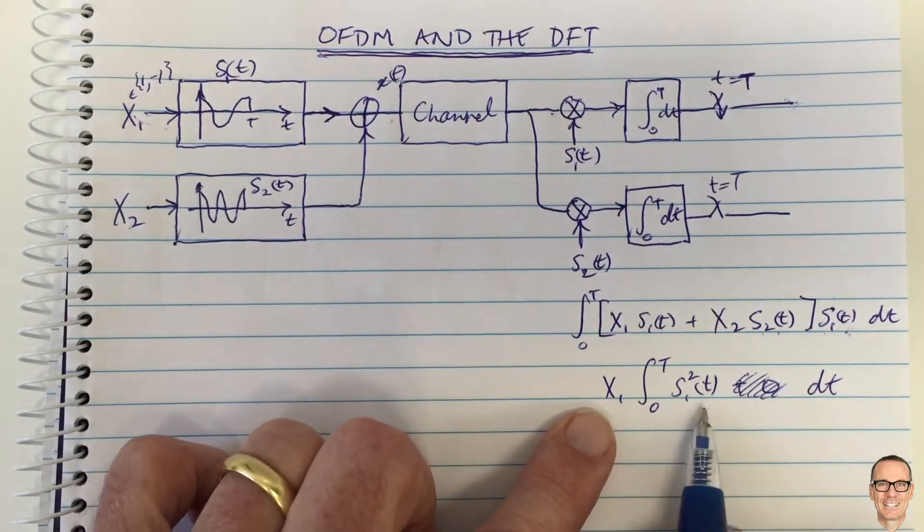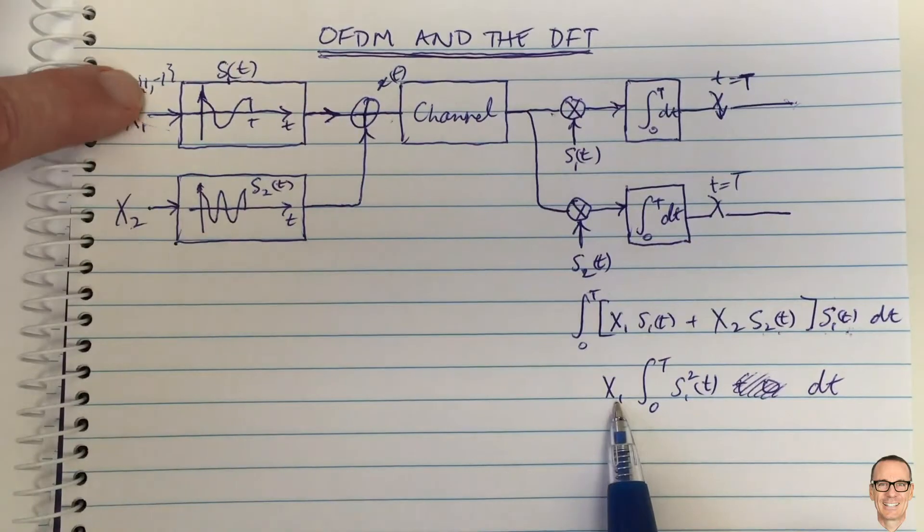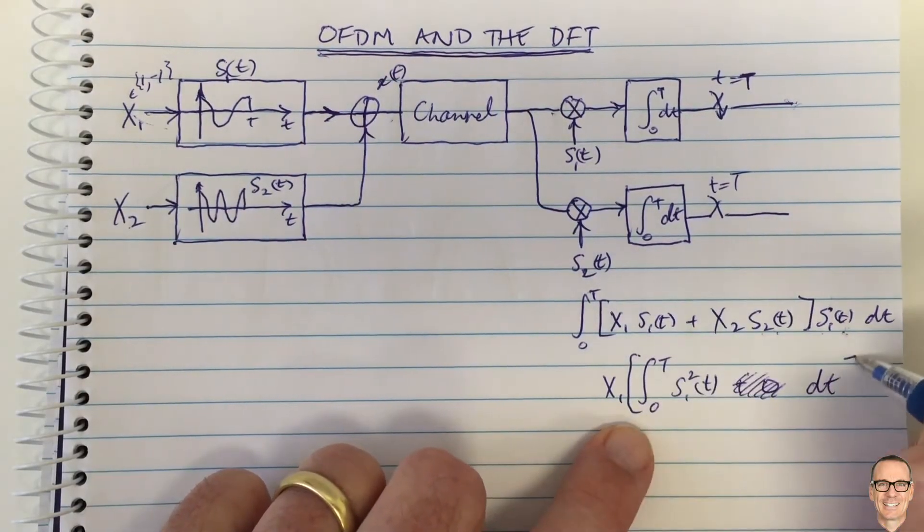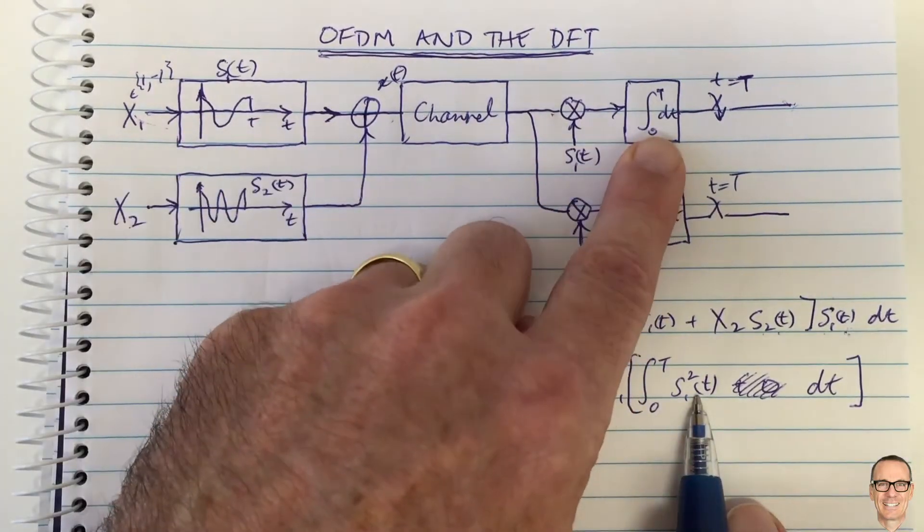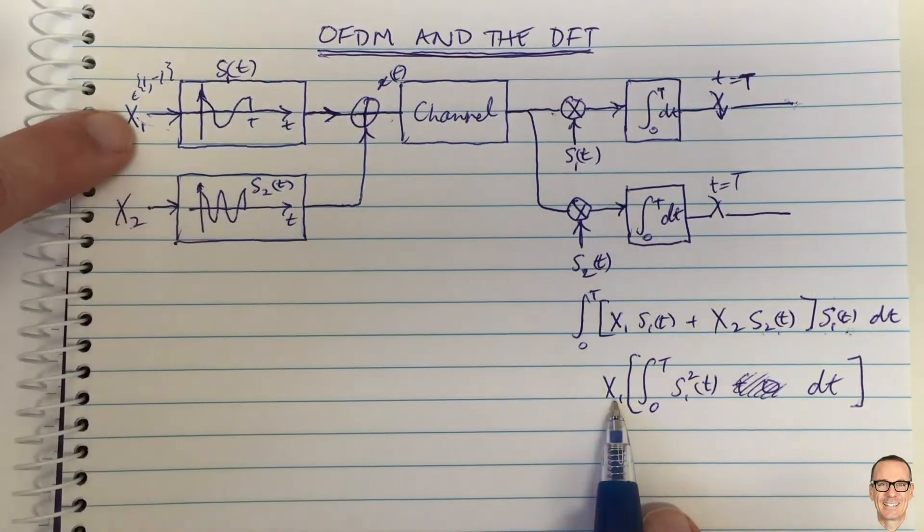So what we're going to get therefore, it's not there. At the output, this output out here, we will have x1, which will be the plus one or minus one, that's our digital data, times the energy that was received from signal one through the matched filter signal one.